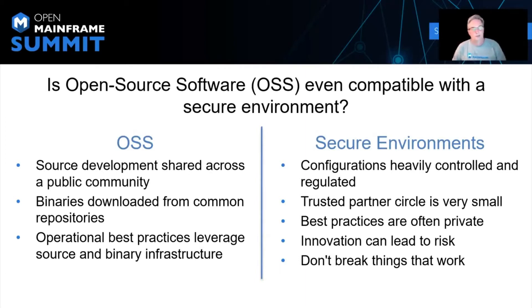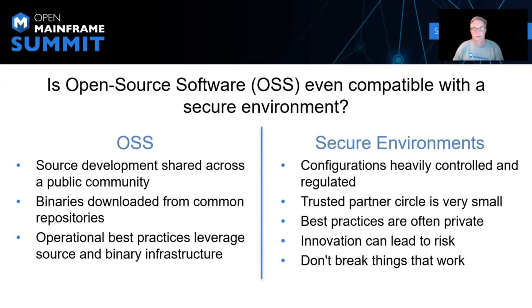The advantage that the mainframe community has is that we have much better componentry to start with. Our encryption capabilities — homomorphic encryption, elliptic curve encryption, pervasive encryption architectures — are foundational technologies that can underpin secure configurations that aren't available on other platforms, and the interfaces to these have been open sourced to support adoption. There's a lot that mainframers have to offer to the open source community in the area of security, including a nearly reflexive thought process that includes security in every configuration and deployment decision.